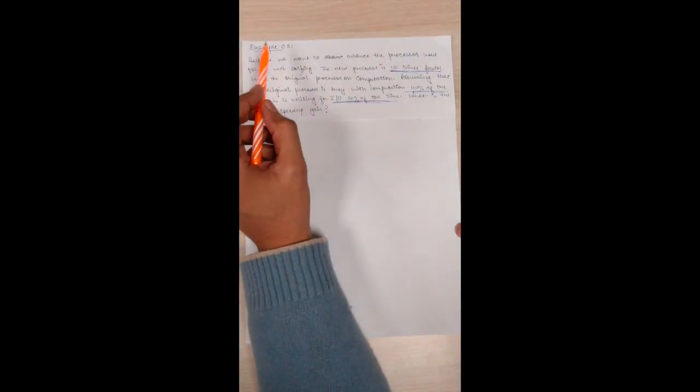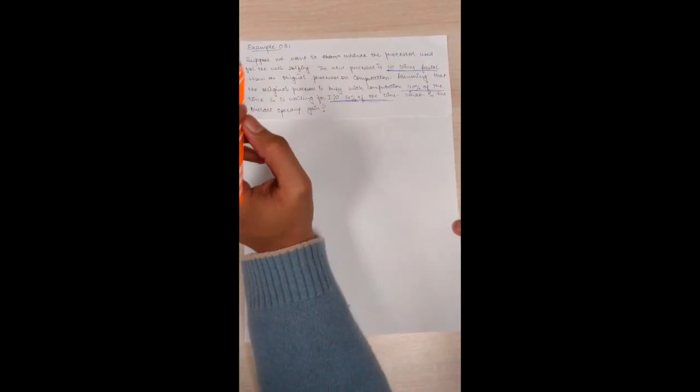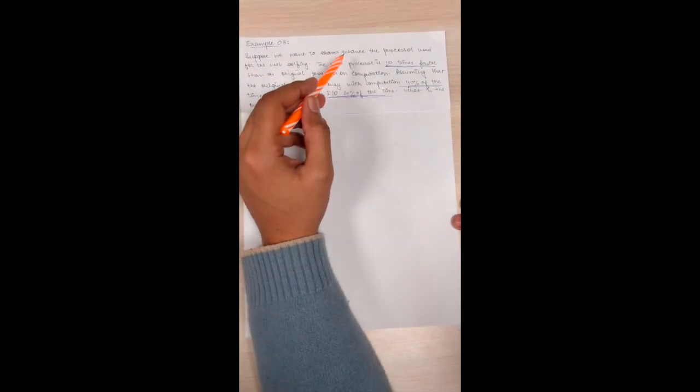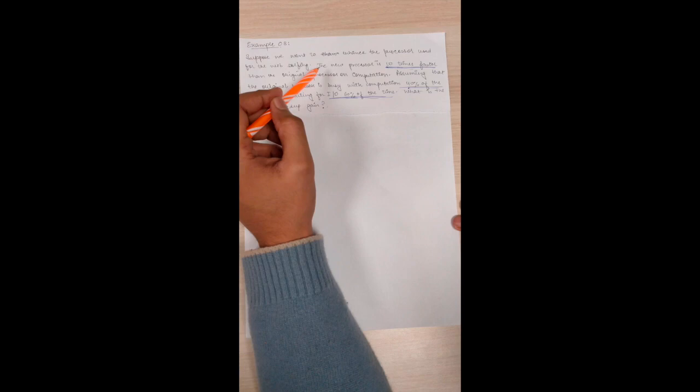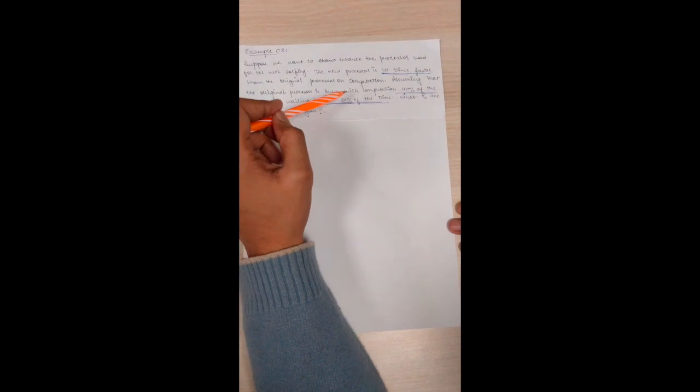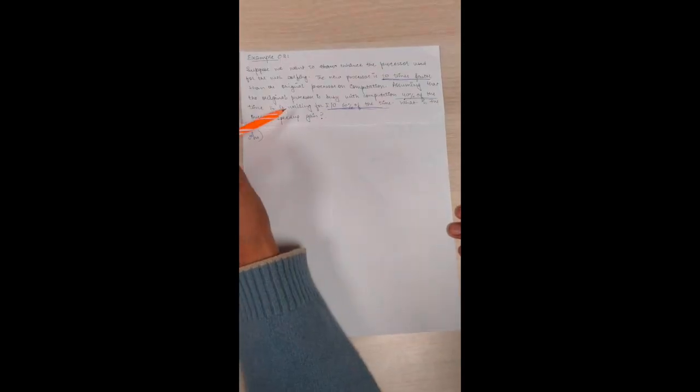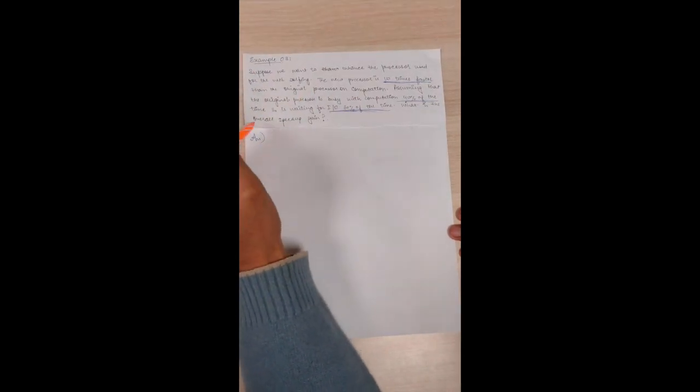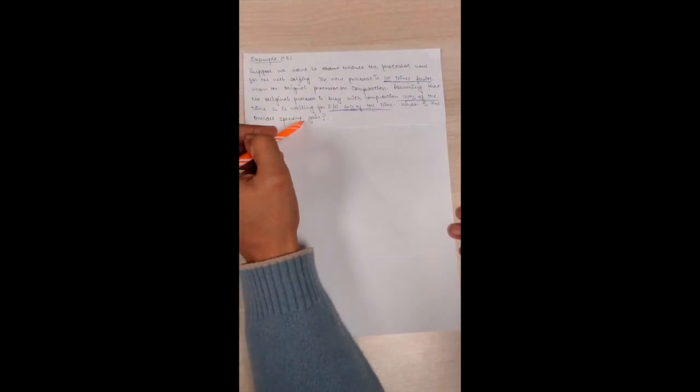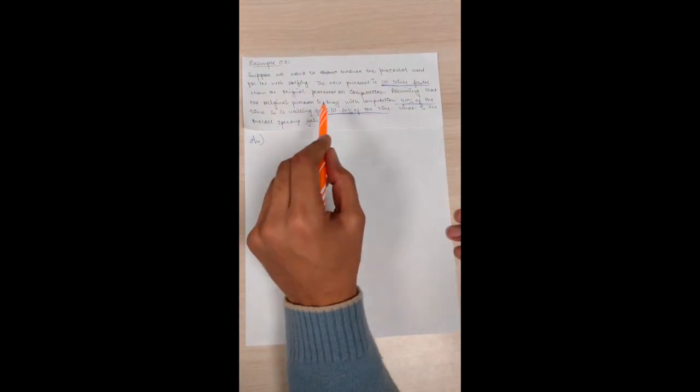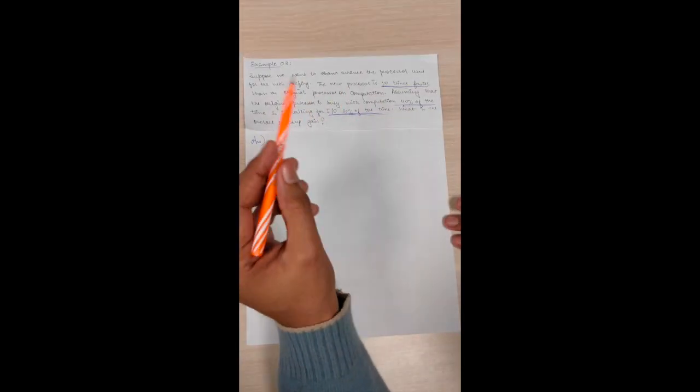Now let's come to the last question which is on the basis of Amdahl's law. Let me read out the question to you. Suppose you want to enhance the processor used for web serving. The new processor is 10 times faster than the original processor on computation. Assuming that the original processor is busy with computation 40% of the time and is waiting for input/output 60% of the time. What's the overall speed up gain? As you can see from the question, we have to calculate the overall speed up gain.